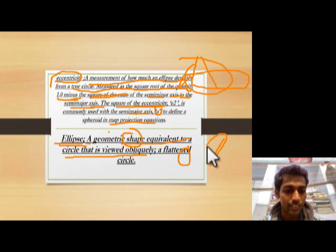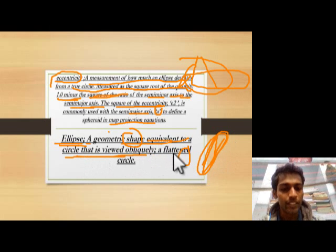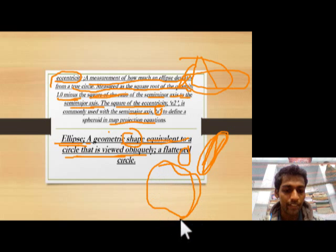Ellipse: a geometric shape equivalent to a circle that is viewed obliquely — a flattened circle. Two sides are very extended and two sides are narrower, making it equivalent to a circle viewed obliquely.